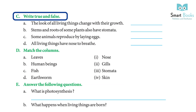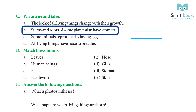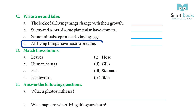C — Write True and False. A: The look of all living things changes with their growth. Answer: True. B: Stems and roots of some plants also have stomata. Answer: True. C: Some animals reproduce by laying eggs. Answer: True. D: All living things have a nose to breathe. Answer: False.